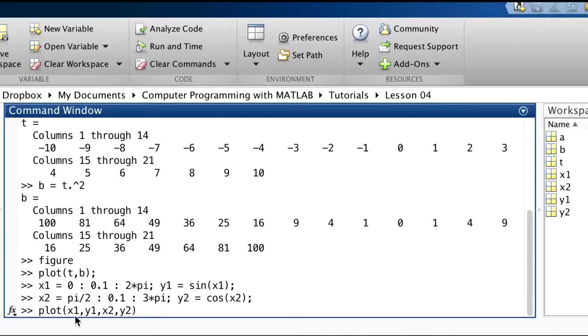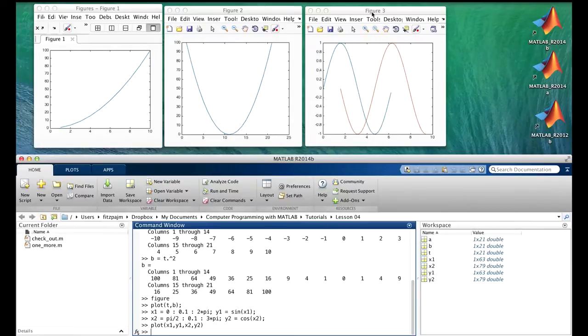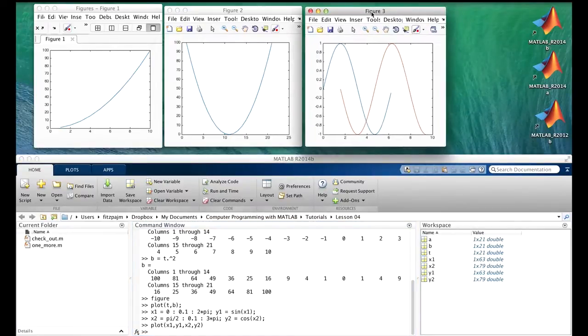And both these pairs, even though they have different lengths from each other, can be plotted on the same plot. Let's do that. Note that the order is xy, that is horizontal vertical, and xy horizontal vertical. And here goes our plot. Note that the plot shows up in figure 3 in place of what was there, because we didn't give the command figure again.